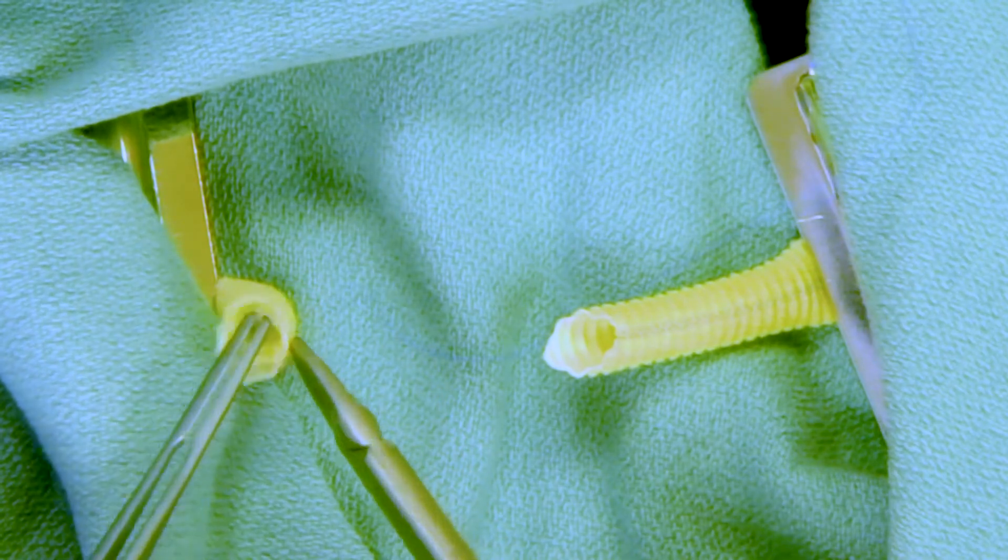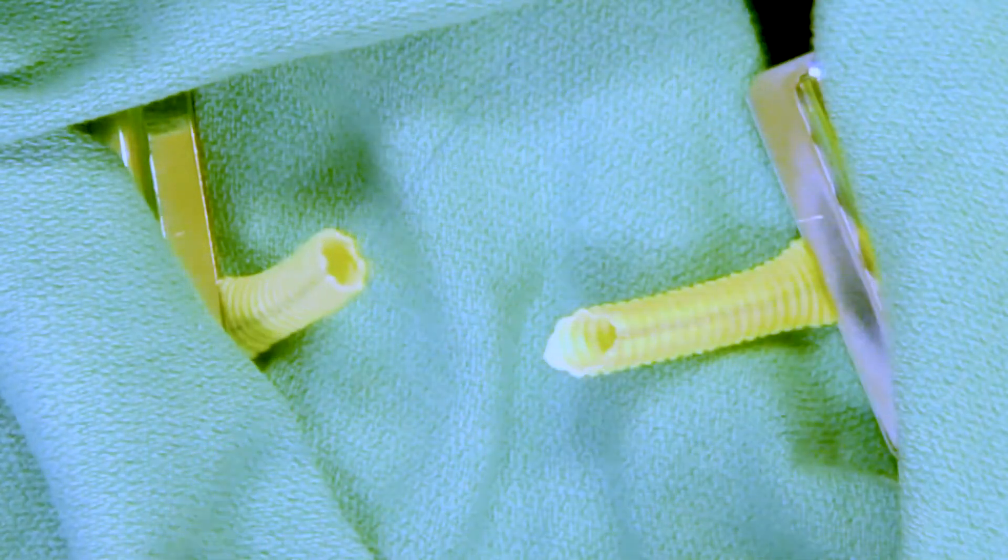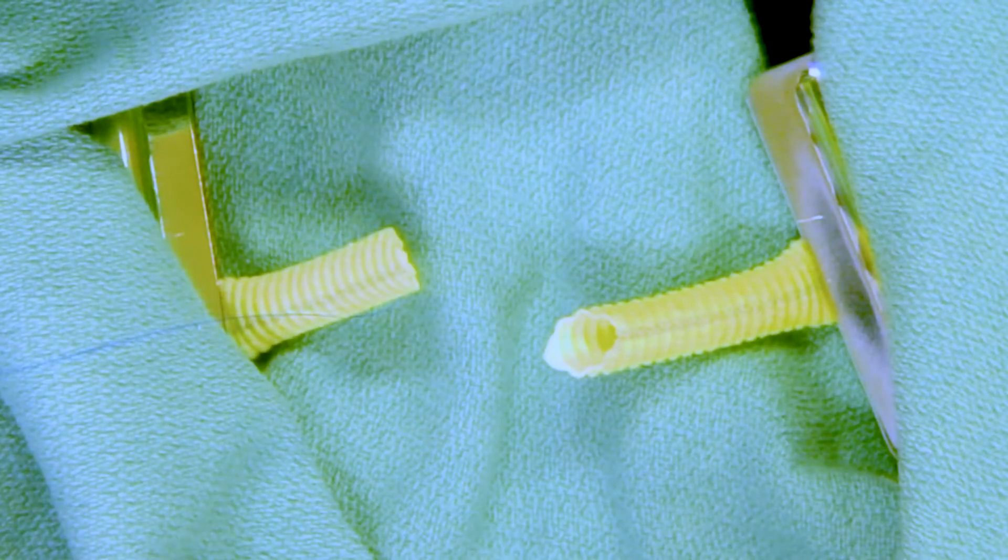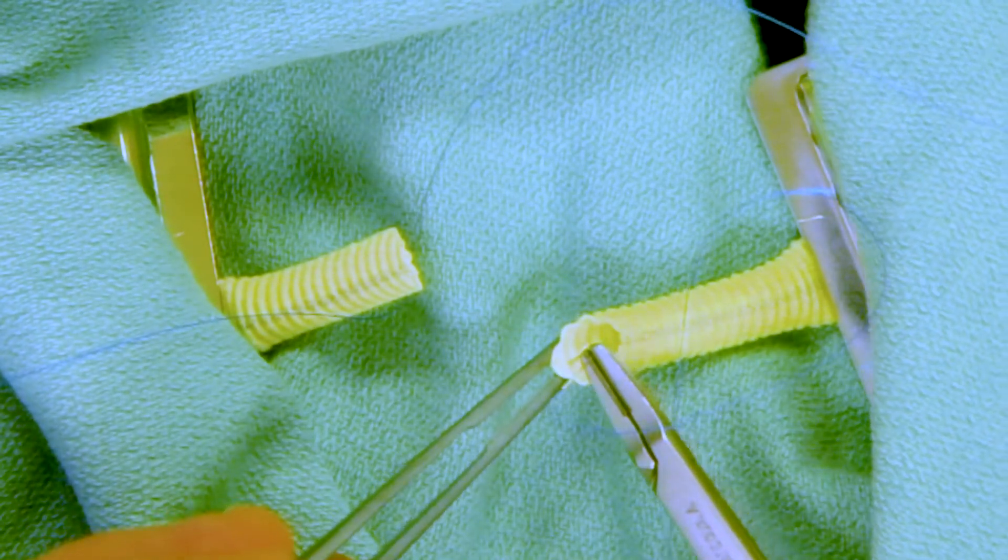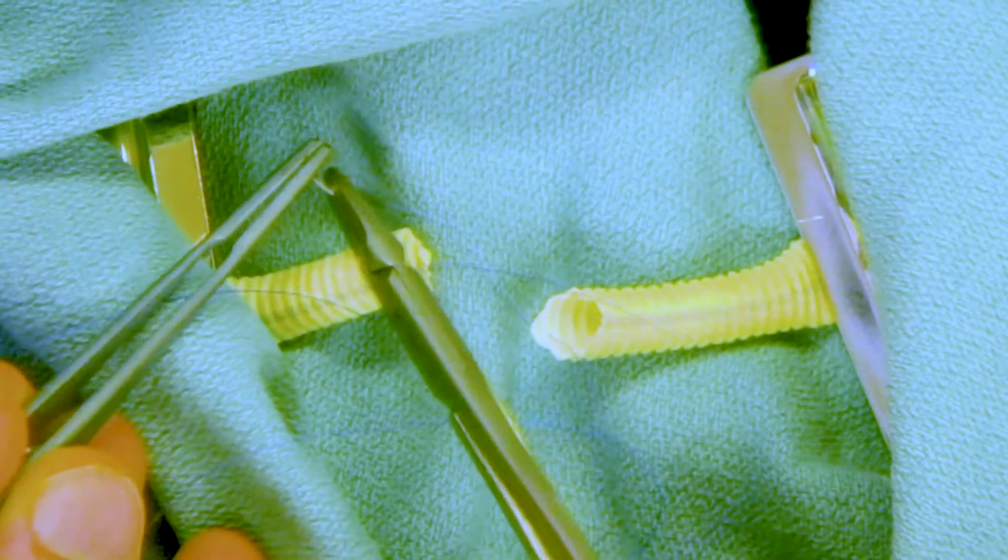We start the anastomosis on the outside of either side, in this case the heel of the graft on the left, and in this case we're parachuting the anastomosis, meaning we're not going to tie down the knot for the first pass of the suture.